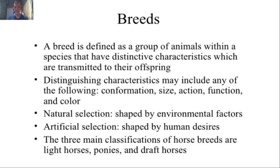When we say artificial selection, that involves human intervention. For example, with pigs, there's AI — artificial insemination. You don't necessarily have to bring the boar to the sow; nowadays they just collect the semen. So with artificial selection, it depends on what the person wants — what color of pig or horse they prefer.